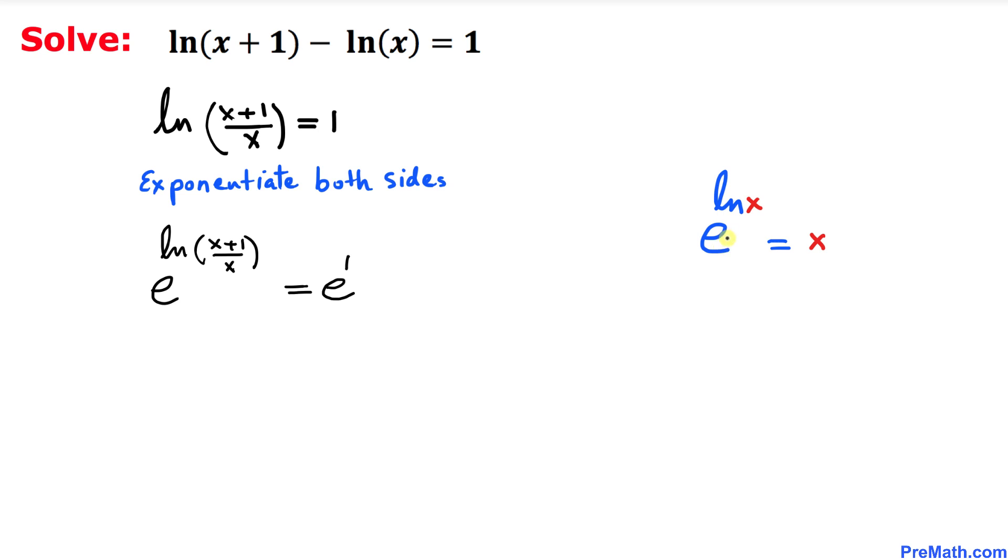Now we are going to use this well-known fact: e power natural log of x is always equal to simply x. In other words, this e and this natural log undo each other, so we end up with simply x. So over here in this equation, this e and this natural log undo each other, so we end up with simply x plus 1 divided by x equals e power 1, which is the same as e.